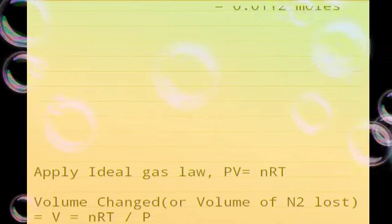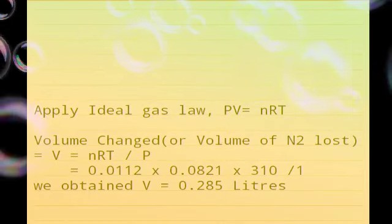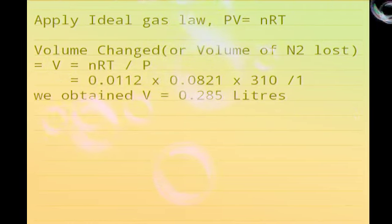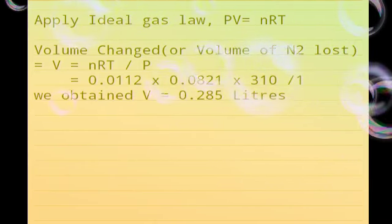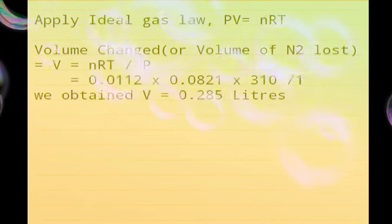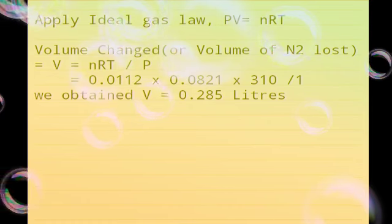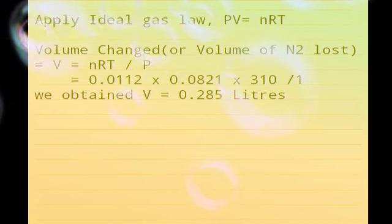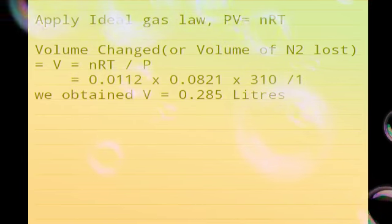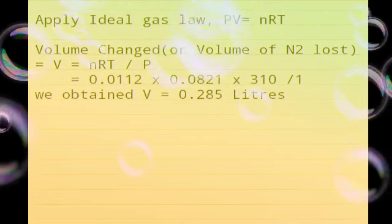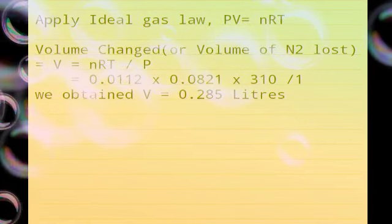After you apply the ideal gas law PV equals nRT, you can find this volume. This will tell you how much volume will change. If you take the value of R as 0.0821 and the temperature as 37 degrees Celsius which is 310 Kelvin and the pressure is 1 atmosphere, then you will obtain 0.285 liters as the volume of N2 lost.